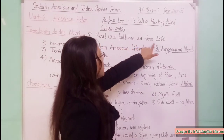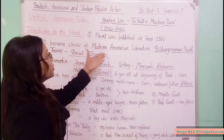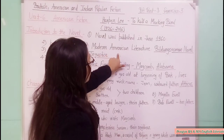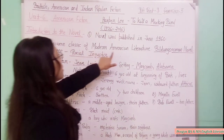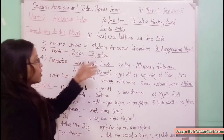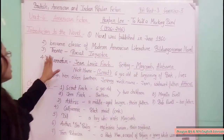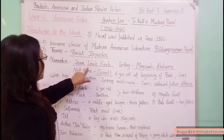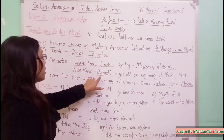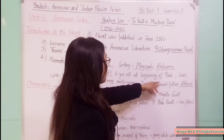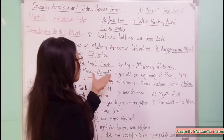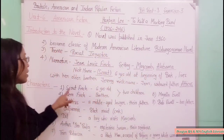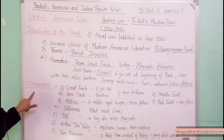To Kill a Mockingbird became a classic of modern American literature. This is a Bildungsroman novel and its theme is racial injustice between Black and white men. The narrator is Jean-Louise Finch, whose nickname is Scout. She is six years old at the beginning of the book. The setting is Maycomb, Alabama, and the story involves Scout, her brother, and their widowed father.